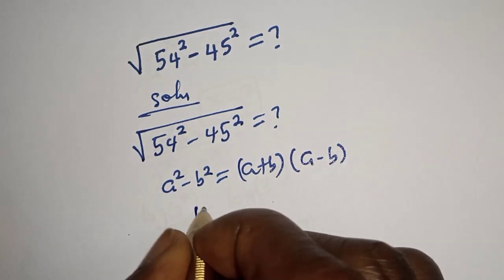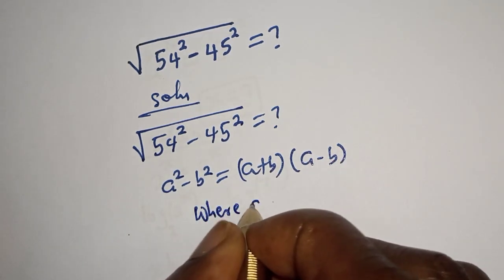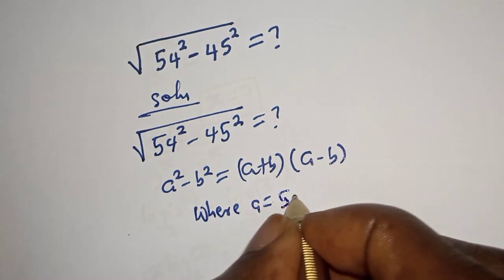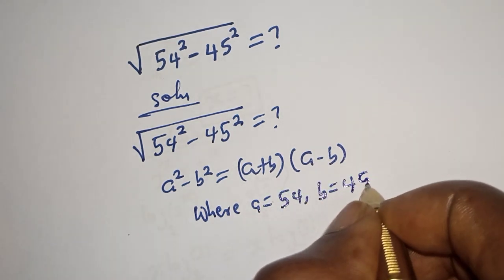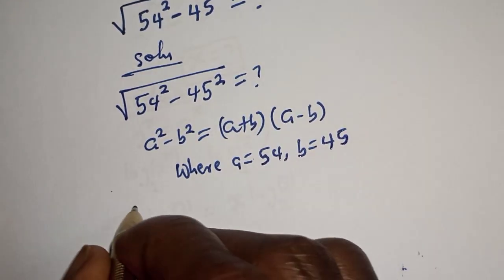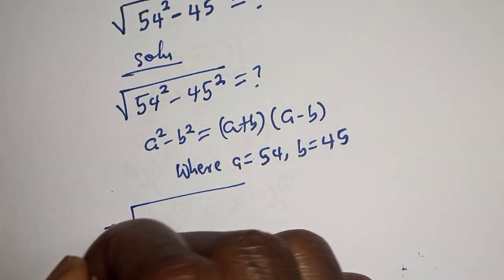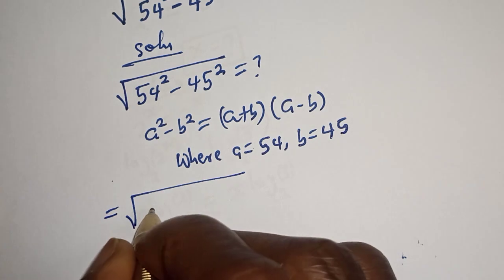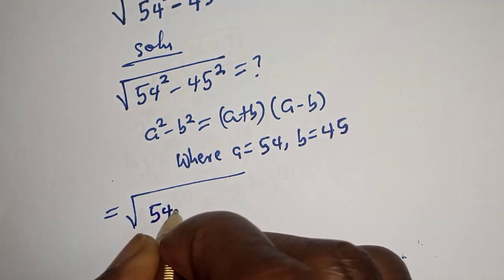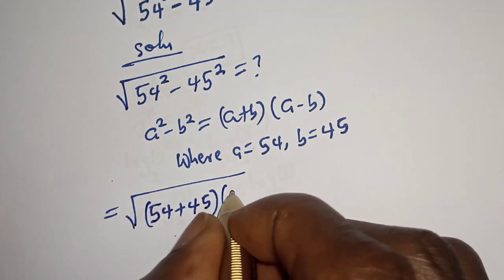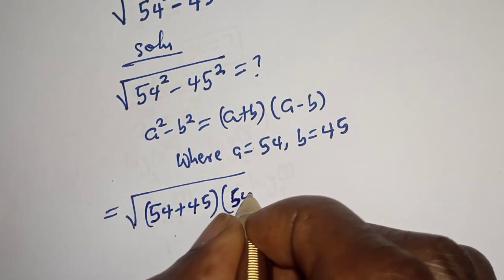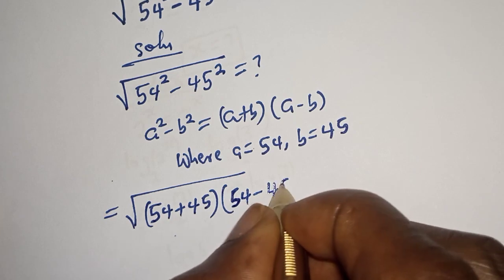where a is equal to 54 and b is equal to 45. Then, this is square root of 54 plus 45 multiplied by 54 minus 45.